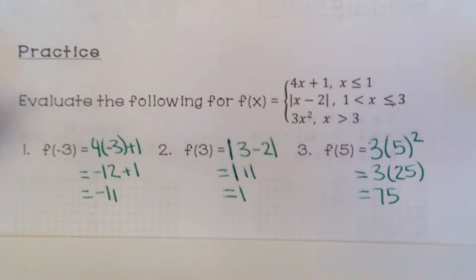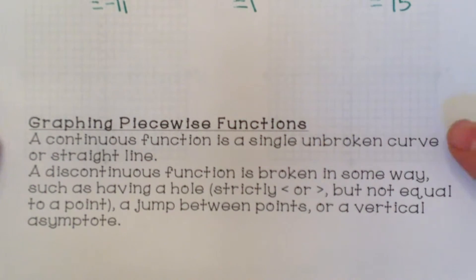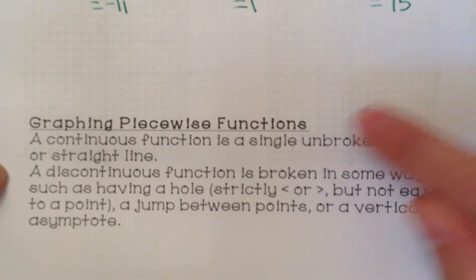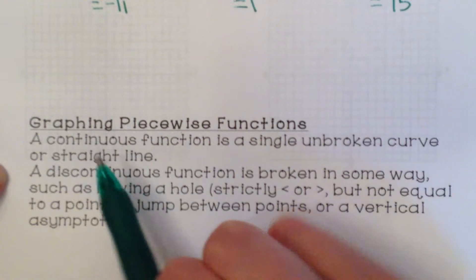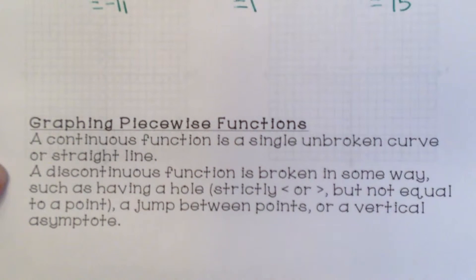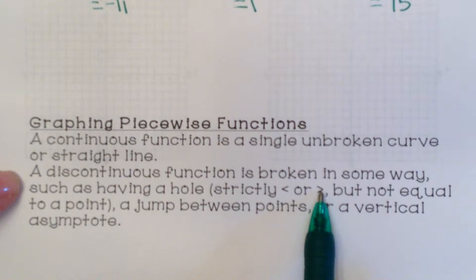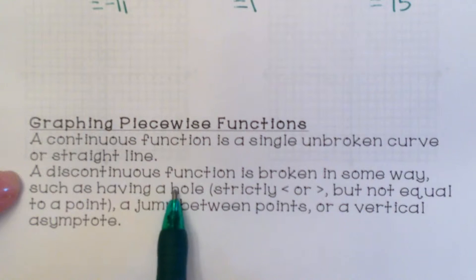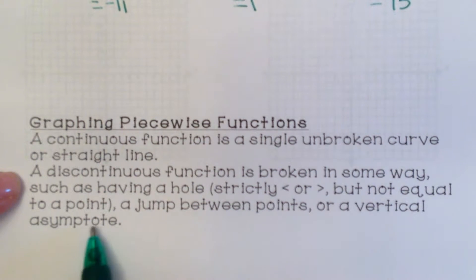They're called piecewise functions because there are different pieces or parts of the function. A quick introduction to types: continuous and discontinuous. A continuous function is a single unbroken curve or straight line. A discontinuous function is broken in some way — such as having a hole. If you have strictly less than or greater than (but not equal to) a point, you will have a hole. A jump between points or a vertical asymptote would also be discontinuous.